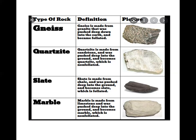Gneiss is formed from granite after being subjected to heat and pressure. It has alternating light and dark bands. This is all about the different types of rock. In this chapter we have learned about the three main types of rocks: igneous, sedimentary, and metamorphic. Thank you, children. Have a good day.